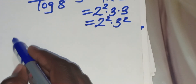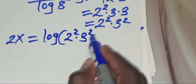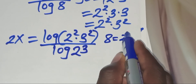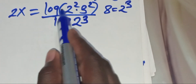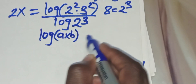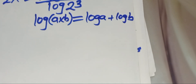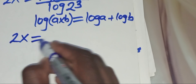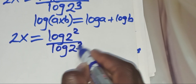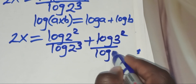Substituting this, we'll have 2x equal to log of 2 to the power 2 multiplied by 3 to the power 2, divided by log of 2 to the power 3, since we can express 8 as 2 to the power 3. Now log of 2 squared times 3 squared is in the form of log a multiplied by b, which we can express as log a plus log b. Applying this property, we'll have 2x equal to log 2 to the power 2 divided by log 2 to the power 3, plus log 3 to the power 2 divided by log 2 to the power 3.